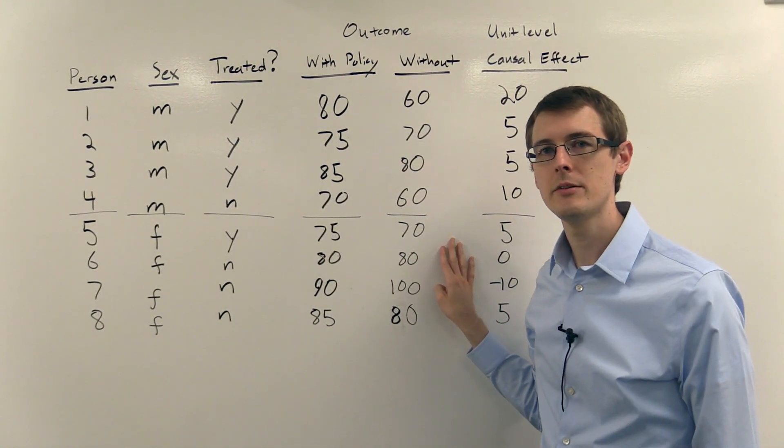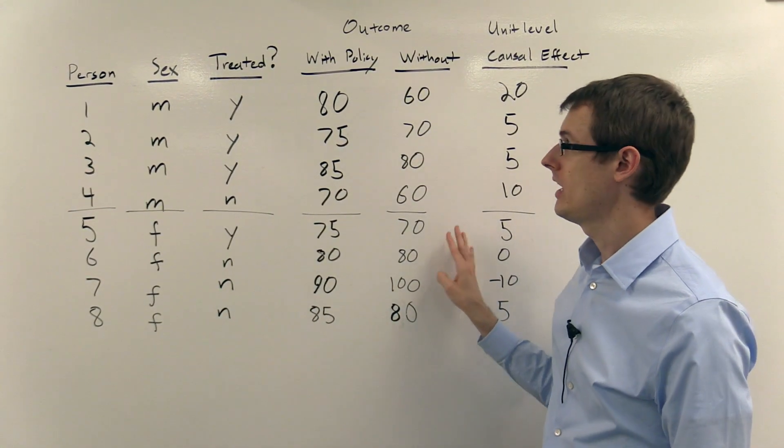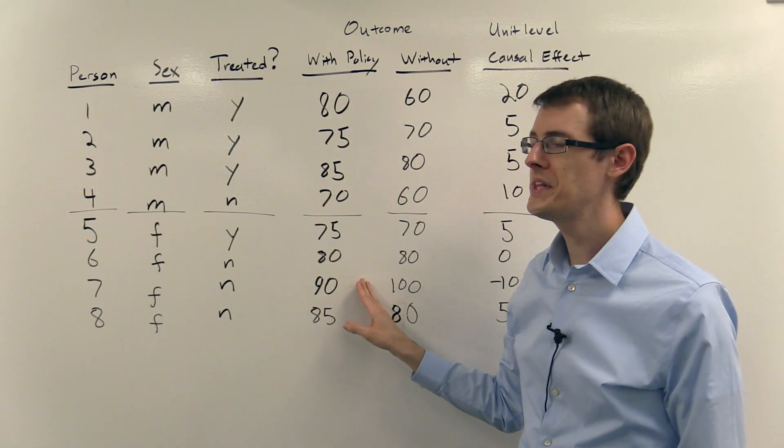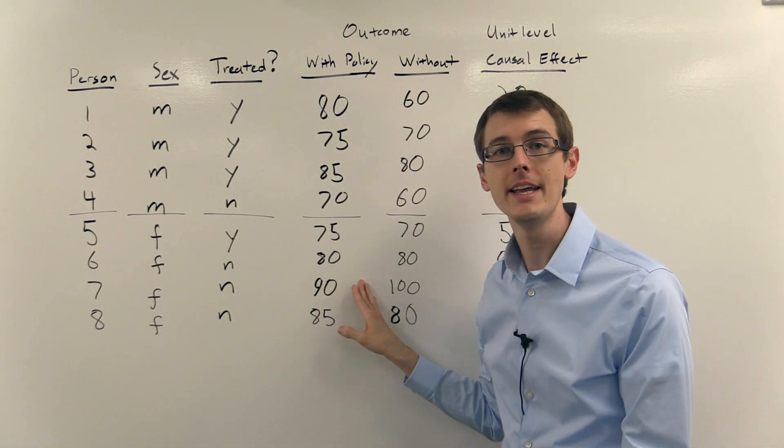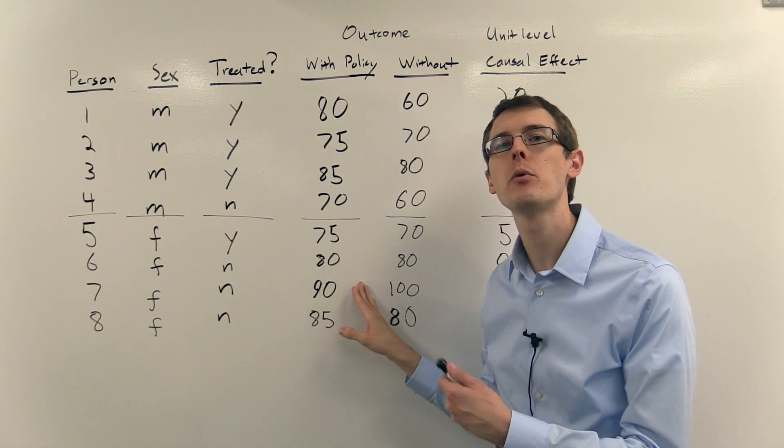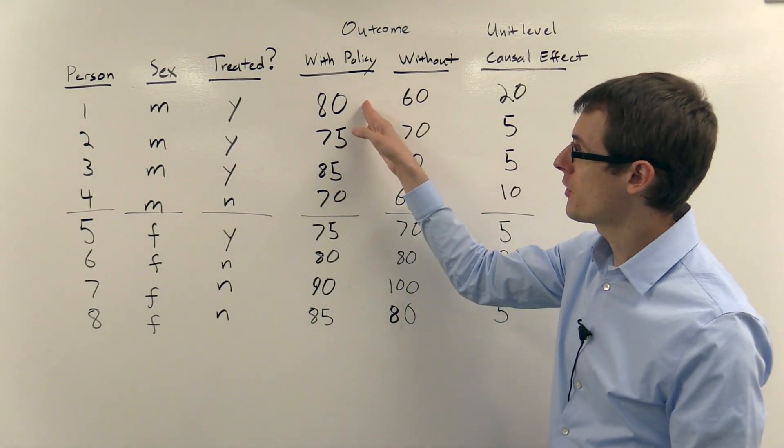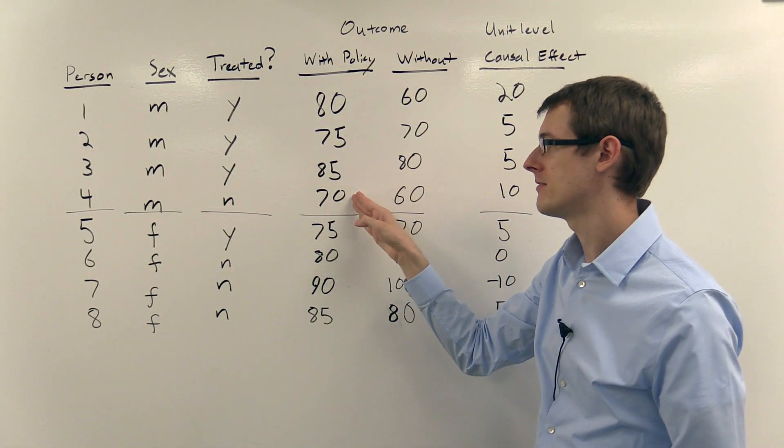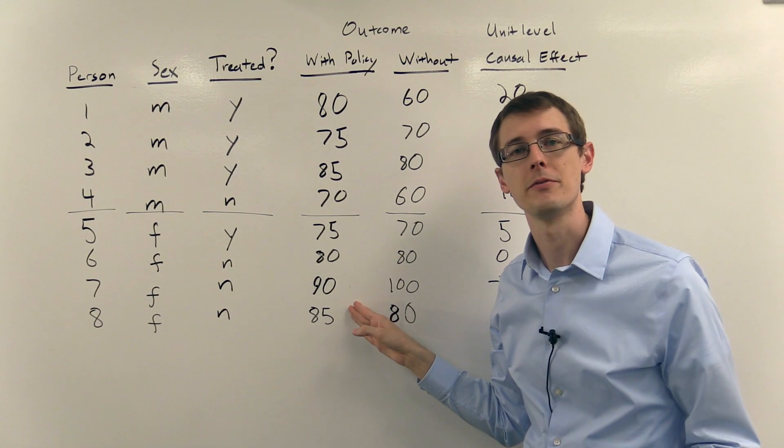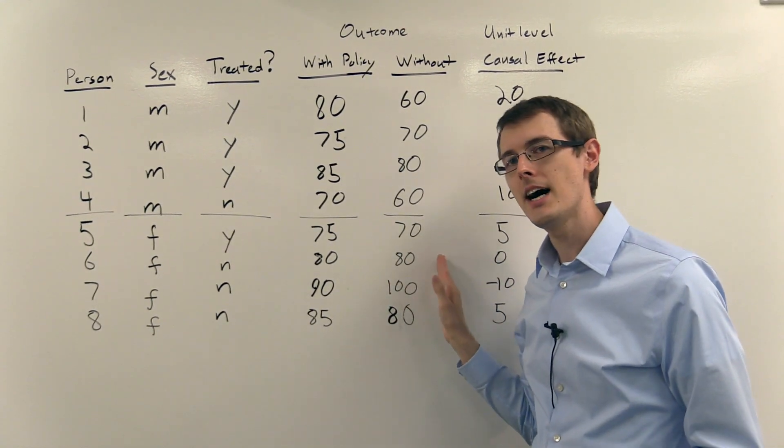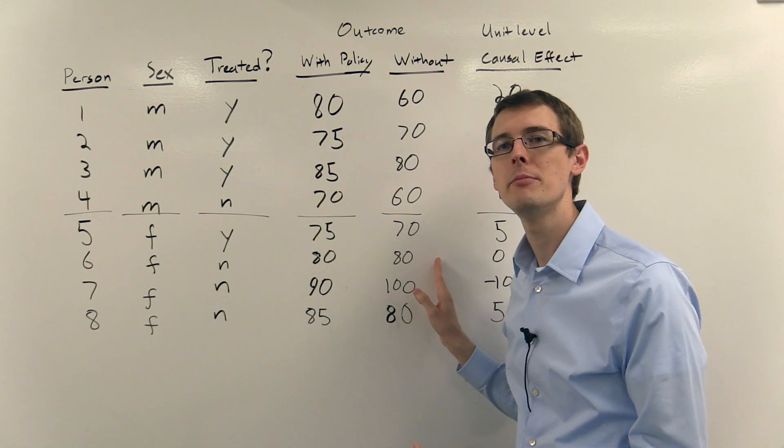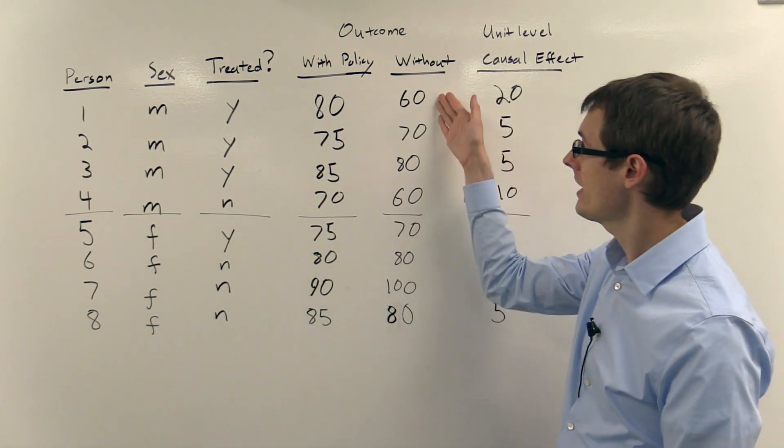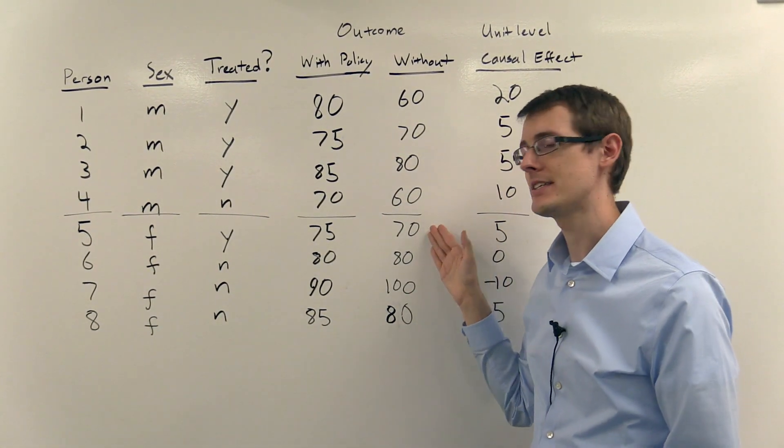Now over here I have my columns of potential outcomes. So the first column is what outcome would they have if they were treated. So the first person has 80, 75, 85, 70, and then similarly for the females. The next column tells me the potential outcome of what would happen to them if they weren't treated. 60, 70, 80, 60, etc.